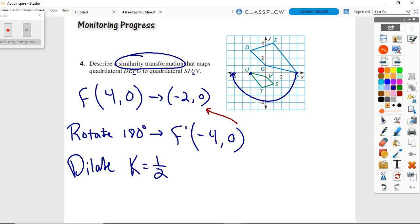You might be like, well you could do this in one step with a negative, but they want a similarity transformation that takes you two steps. Alright, so guys, 4.6, nothing really new other than the GeoGebra, it's all just combining dilation with something else. Peace.